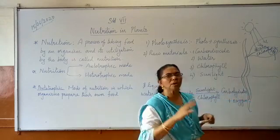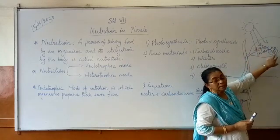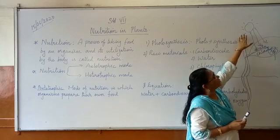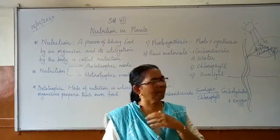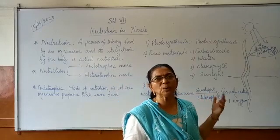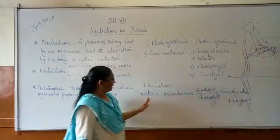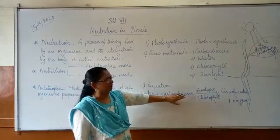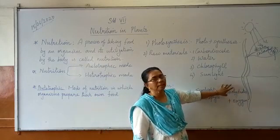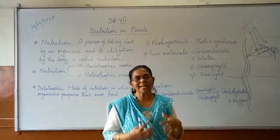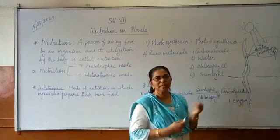Now you understand how the leaf receives these four raw materials: water, chlorophyll, carbon dioxide, and sunlight. Plants cannot prepare food during night because there is no sunlight. The chemical reaction takes place in the leaves: water plus carbon dioxide, in the presence of sunlight and chlorophyll, produces carbohydrate, which is stored in the form of starch. Along with that, oxygen is also produced.